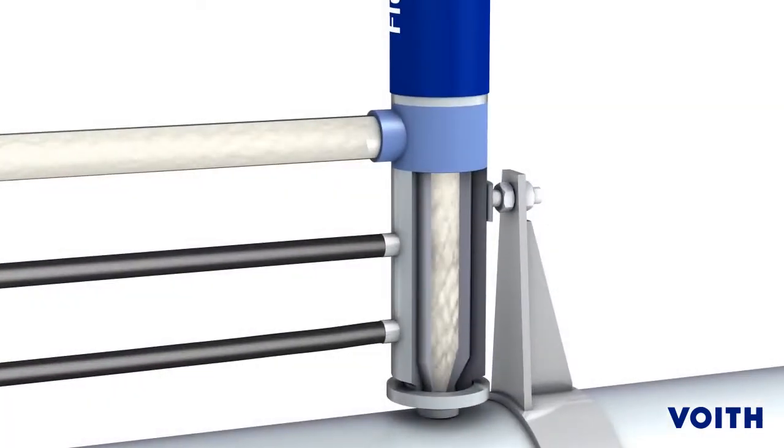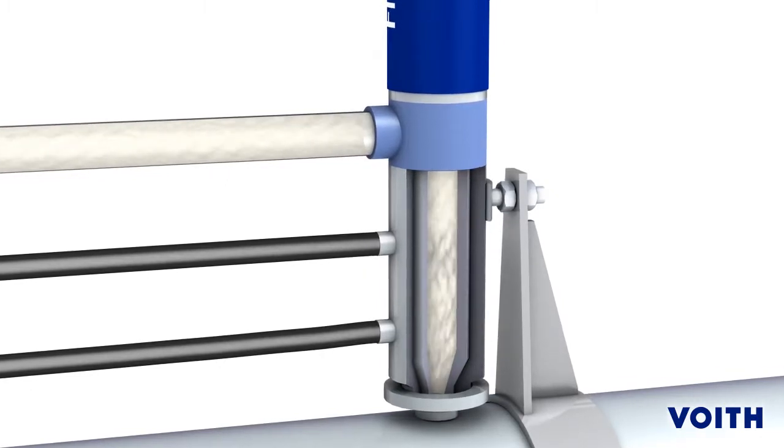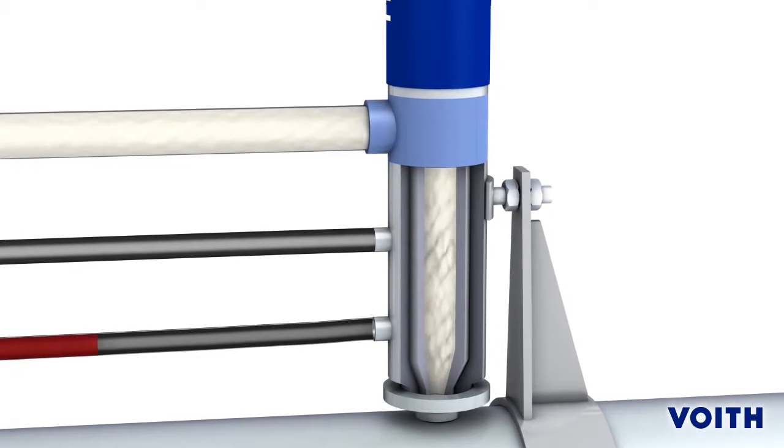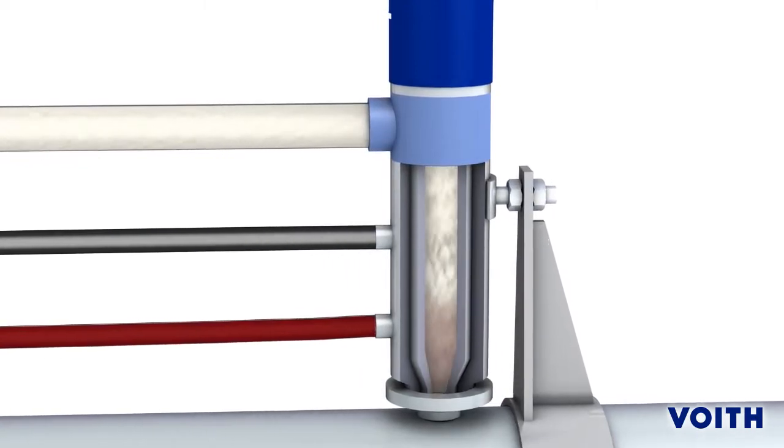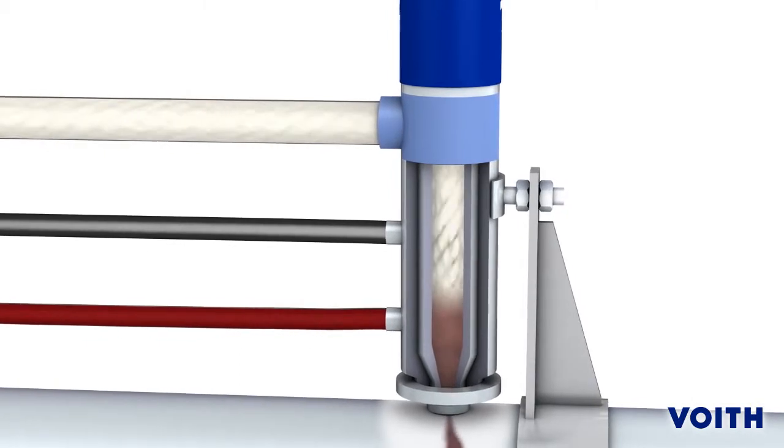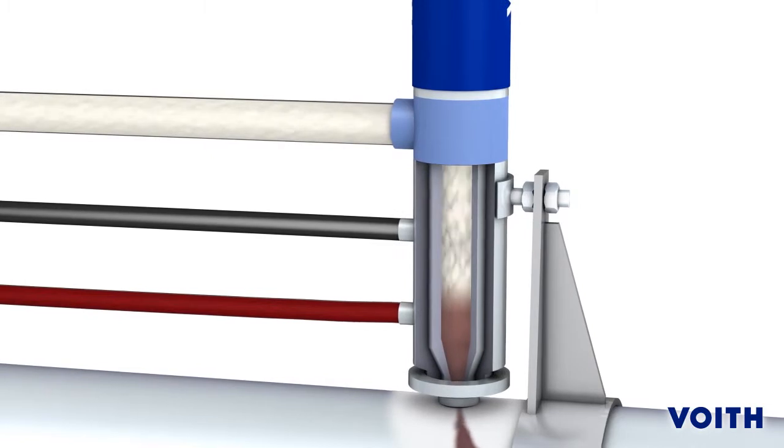The mixing process takes place in the specially developed Flojek adjector, the key component of the Flojek dosing system. This is where the chemical is added to the injection medium and mixed homogeneously. Due to the increase in volume, the chemical is diluted optimally and then added immediately to the process flow.